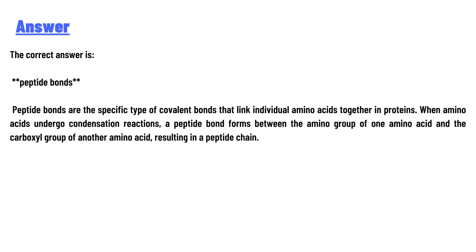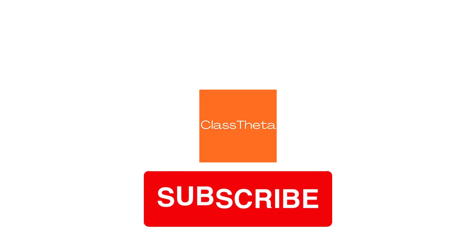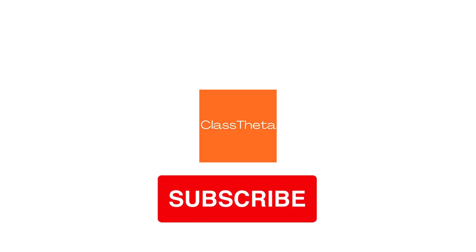The correct answer is peptide bonds. Peptide bonds are the specific type of covalent bonds that link individual amino acids together in proteins. When amino acids undergo condensation reactions, a peptide bond forms between the amino group of one amino acid and the carbonyl group of another amino acid, resulting in a peptide chain.